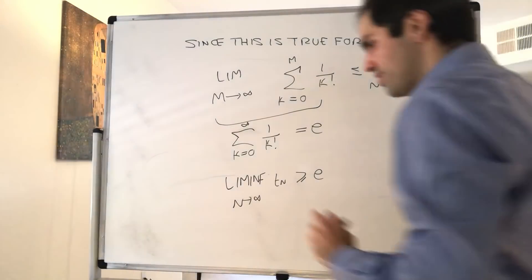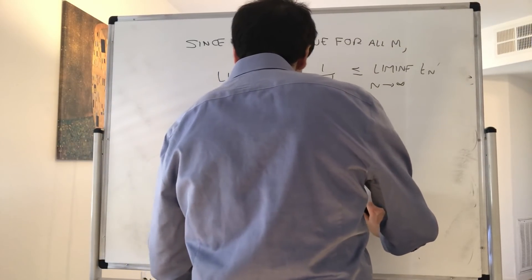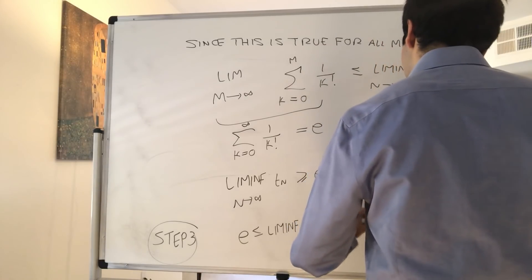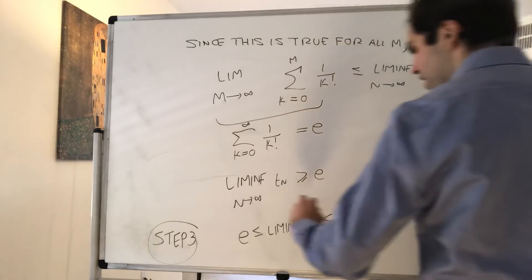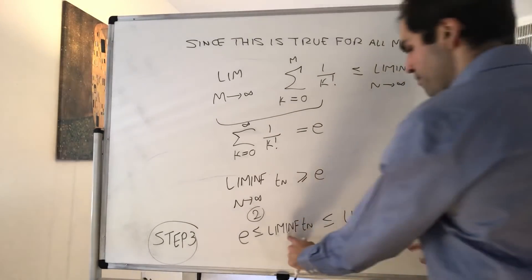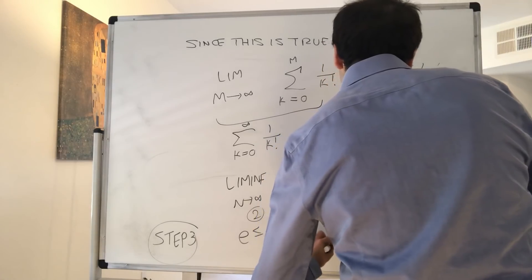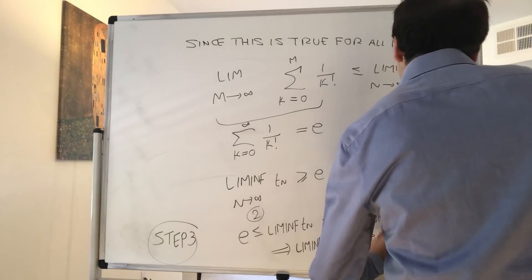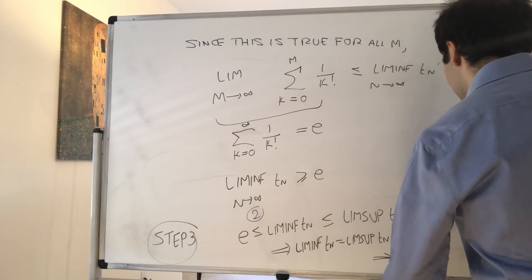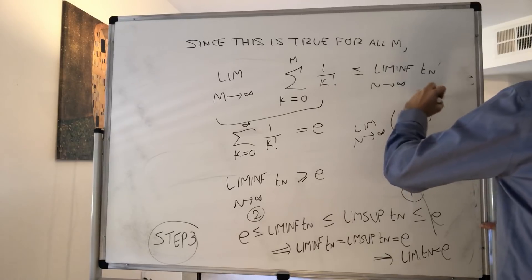To summarize the conclusion: we have e less than or equal to liminf of t_n, and liminf is always less than or equal to limsup of t_n, and we showed in step one that limsup of t_n is less than or equal to e. So liminf and limsup are both squeezed between e and e, giving liminf of t_n equals limsup of t_n equals e. By the limsup-squeeze theorem, the limit of t_n equals e — that is, the limit as n goes to infinity of 1 plus 1 over n to the nth power equals e.